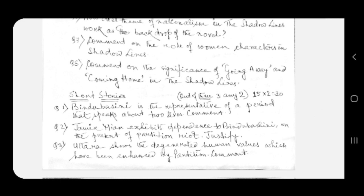Question number one: Bindu Bashini is the representative of a period that speaks about two lives. Comment. Question number two: Jamir Mia exhibits dependence to Bindu Bashini on the pretext of partition riot. Justify.